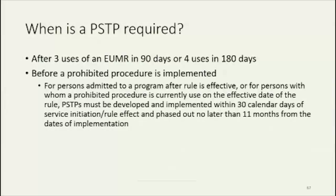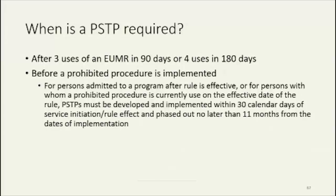It is very specific in statute when prohibited procedures can be used through a positive support transition plan. For persons admitted to a program after the rule is effective, or for persons with whom a prohibited procedure was currently unused on the effective date of the rule, positive support transition plans must be developed and implemented within 30 calendar days of service initiation or rule effect, and phased out no later than 11 months from the dates of implementation. So if you are now under the purview of this rule and using something like mechanical restraint with someone you serve, it was possible that you would not need to immediately phase out the use — if your team determined it would not be therapeutic to do so, you could create a plan and would have 11 months to phase out the use.